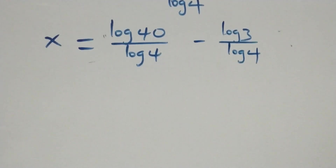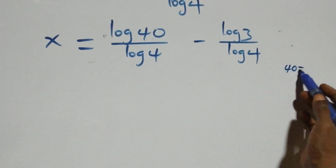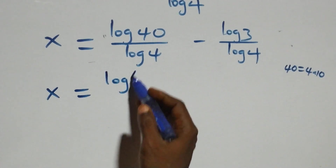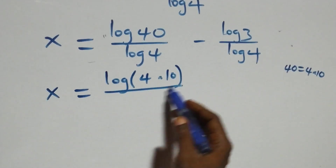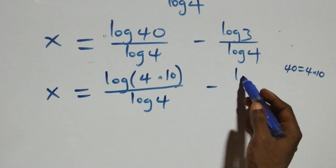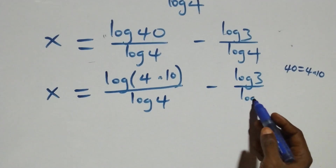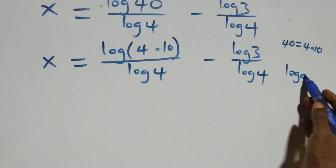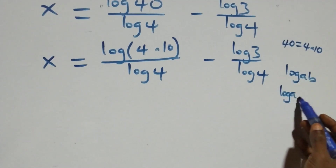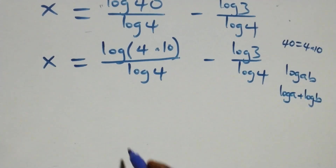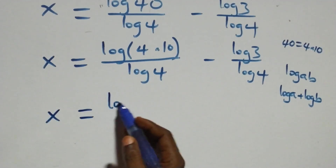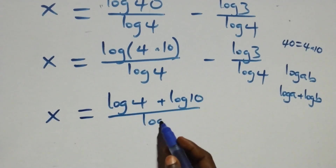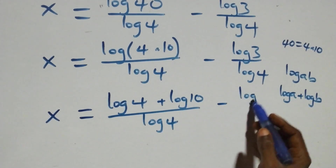Then we separate these into two fractions: x equals to log 40 over log 4 minus log 3 over log 4. We can write 40 as 4 times 10, so this becomes x equals to log(4 times 10) over log 4 minus log 3 over log 4. This follows from the law of logarithm: log a times b equals log a plus log b.